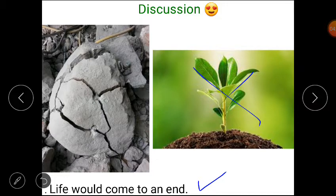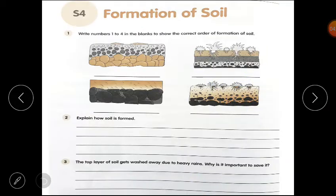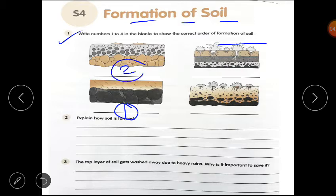Now please open your worksheet S1, formation of soil. First question is, write numbers 1 to 4 in the blanks to show the correct order of formation of soil. First raining hooti hai. Second, rocks breakdown hoona shuru hooti hai. Third, soil ka formation shuru ho jata hai. And fourth, soil form ho jata hai. I hope clear.